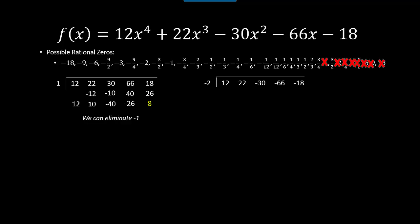Now I'll try −2. Synthetic division gives a remainder of 10, so −2 is not a zero. I check the bottom row for alternating signs — the answer is no, so I'm going to have to try another one.